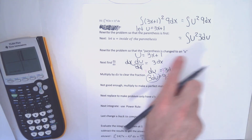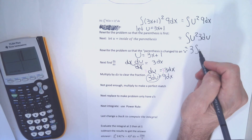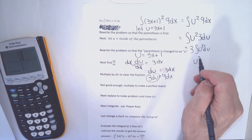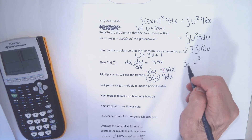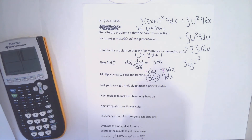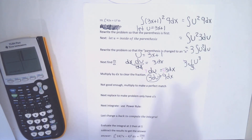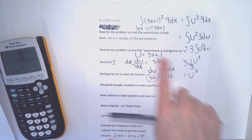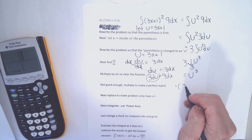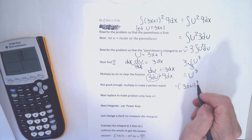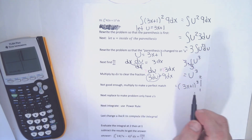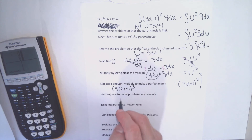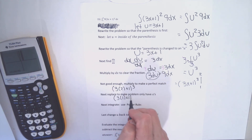I'm going to pass the 3 out front and get 3 times the integral of u squared du. Add 1 to the exponent and get u cubed. Leave the coefficient of 3 and multiply by 1 over 3 — the new exponent. 3 times one third is 1, so those cancel and the integral comes out to u cubed. The numbers 1 and 2 apply to the x's, not the u's. I finish the integration by changing u to 3x plus 1, and the numbers I need to plug in are 1 and 2.